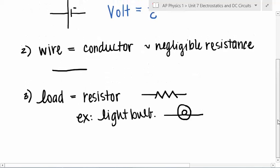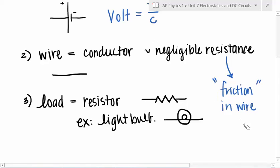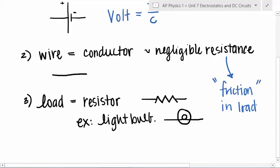What is this resistance, fundamentally? It's basically like friction in the load. It's not like the friction you think of — this is collisions as electrons move through the conductor. There's more than just free space for the electrons to move.